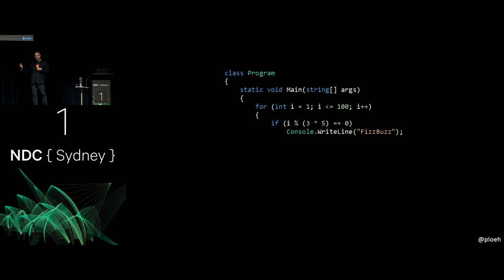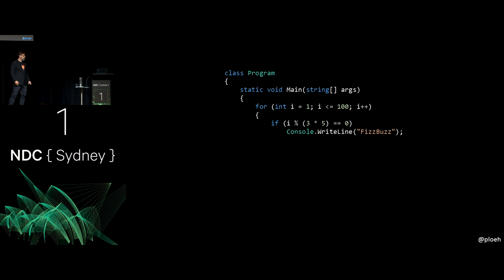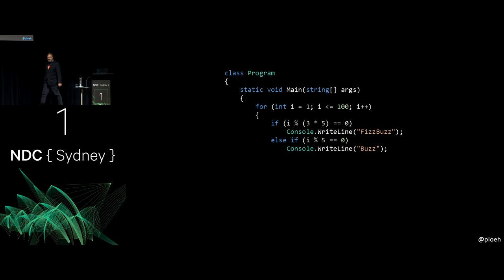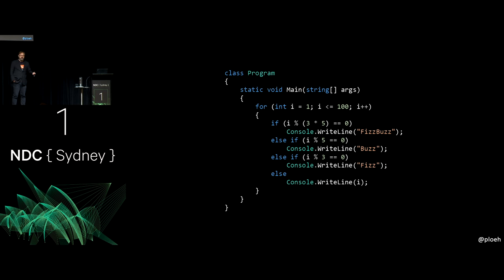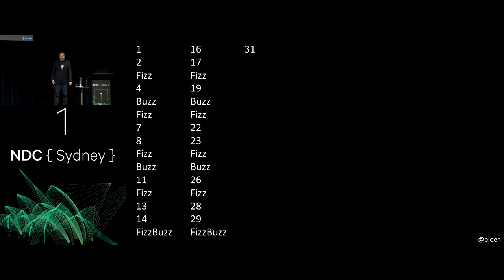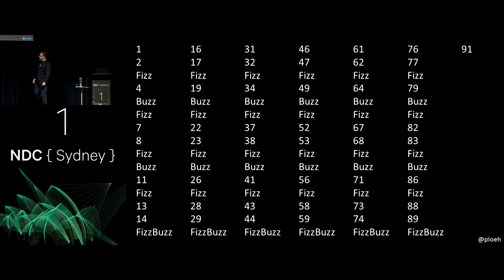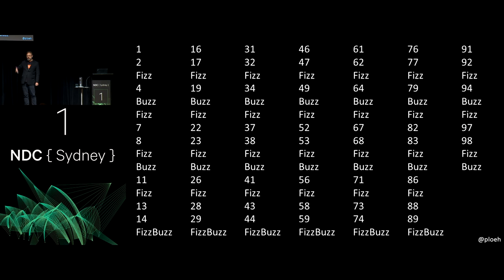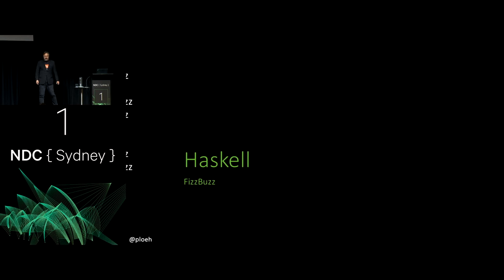It might be even clearer to write: if i mod 3 equals zero AND i mod 5 equals zero, print 'FizzBuzz.' Otherwise if i mod 5 equals zero, print 'Buzz.' If i mod 3 equals zero, print 'Fizz.' Otherwise just print the number. Running this program prints all those numbers; I wrapped the output into multiple columns here to fit everything on screen, but it's one column of output. That's the C# implementation — now let's look at Haskell.